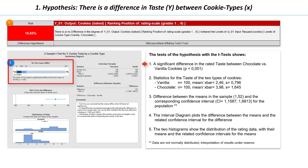We obtain a significant result with a p-value smaller than 0.001, related to the significance level of alpha 0.05, i.e. 5%. The calculated probability of error is therefore smaller than the previously determined typical significance level alpha, and therefore we reject the null hypothesis that there is no difference, and accept the alternative hypothesis that there is a difference.